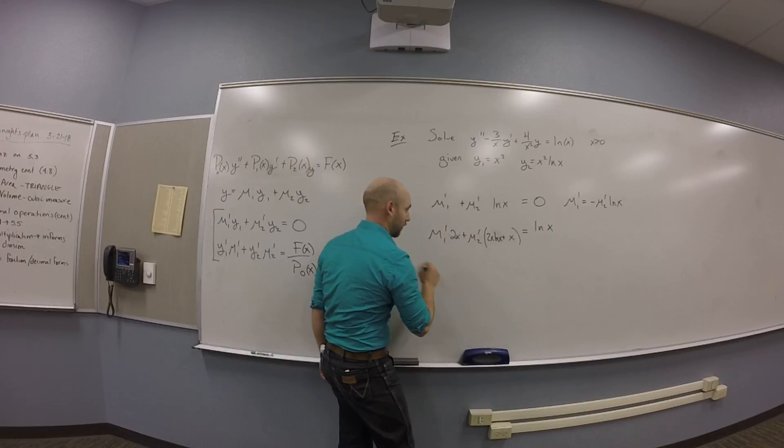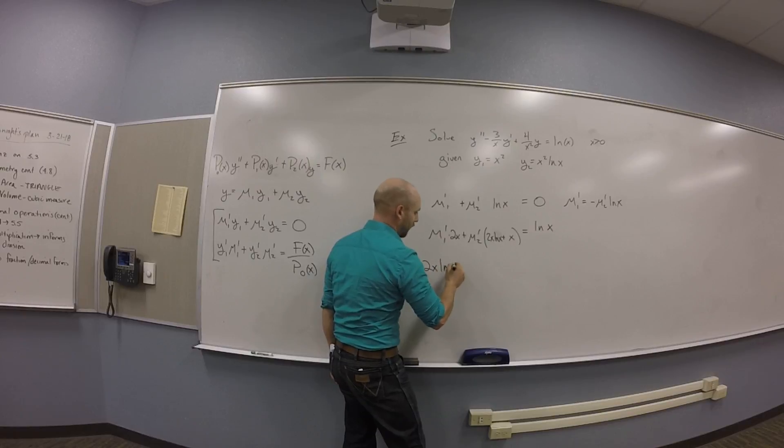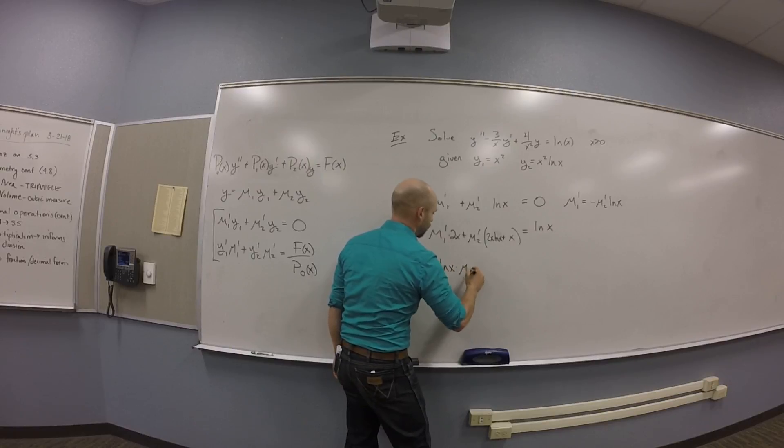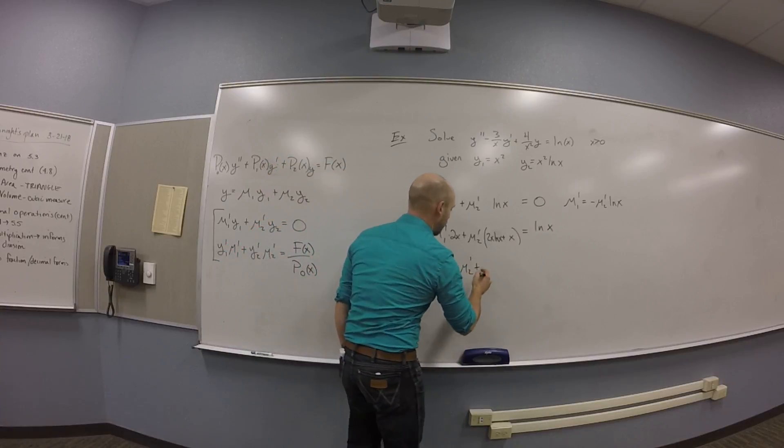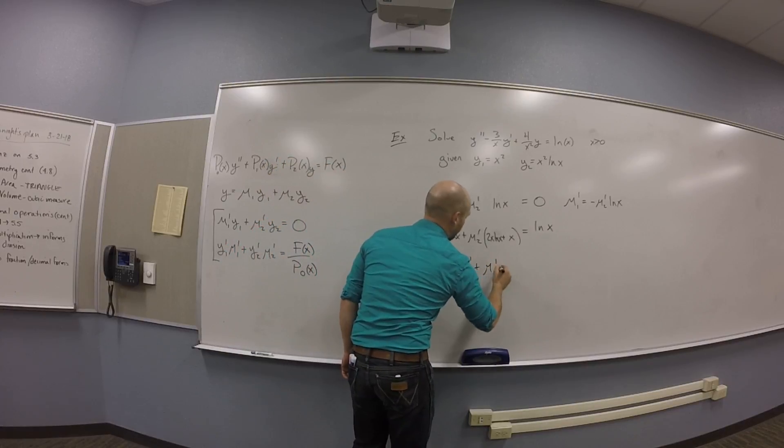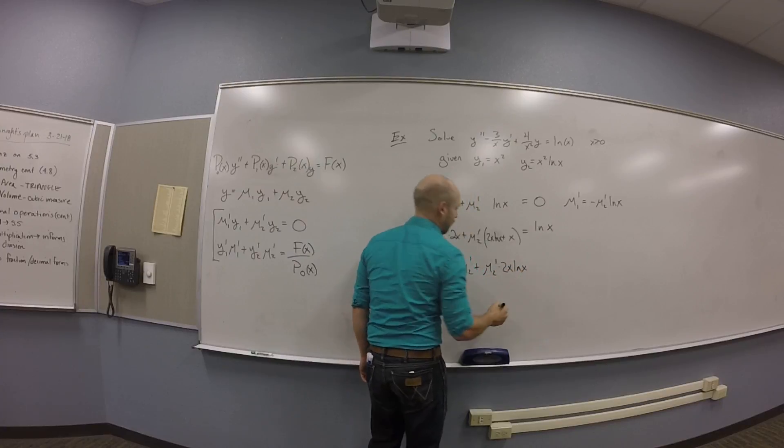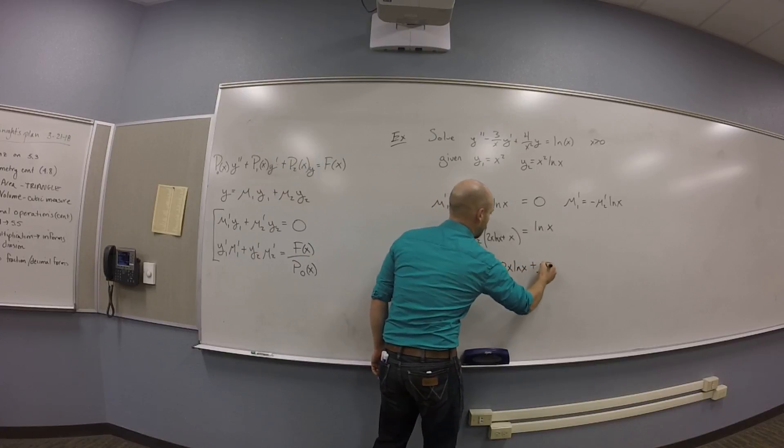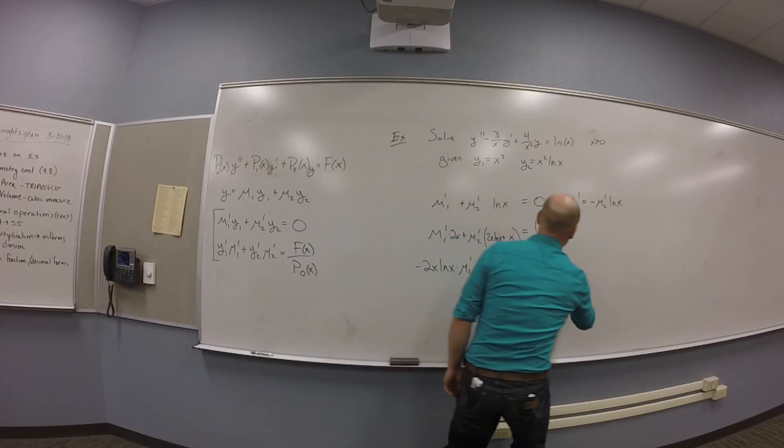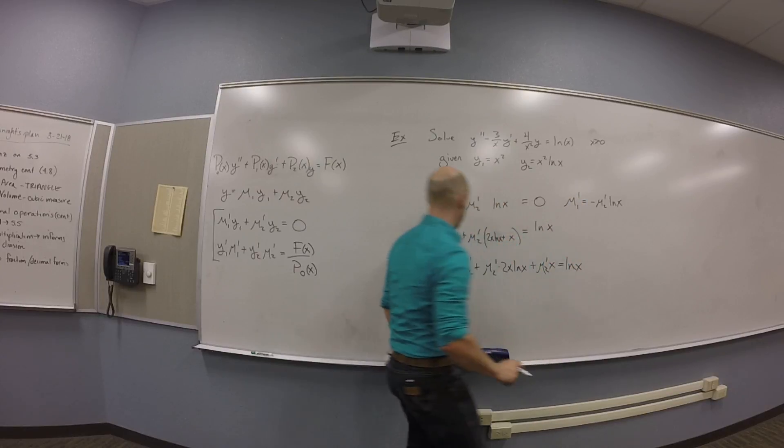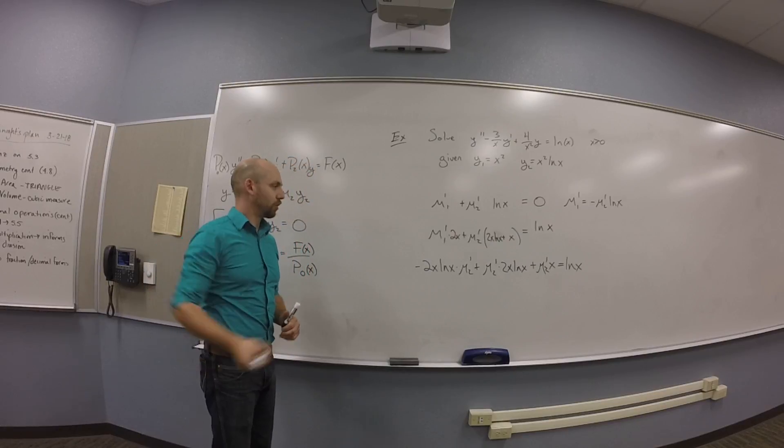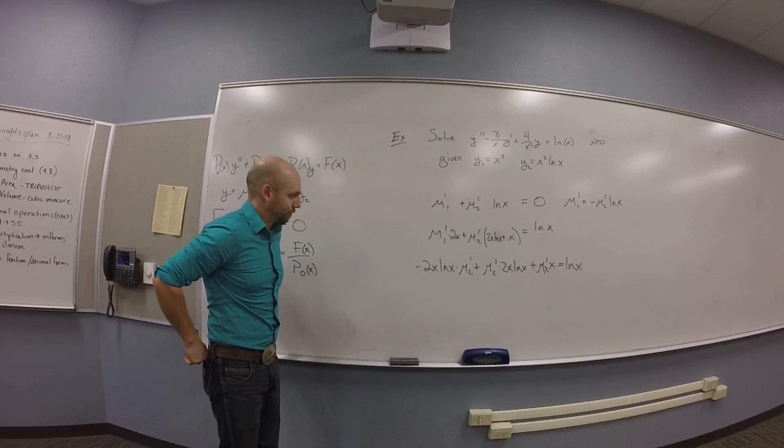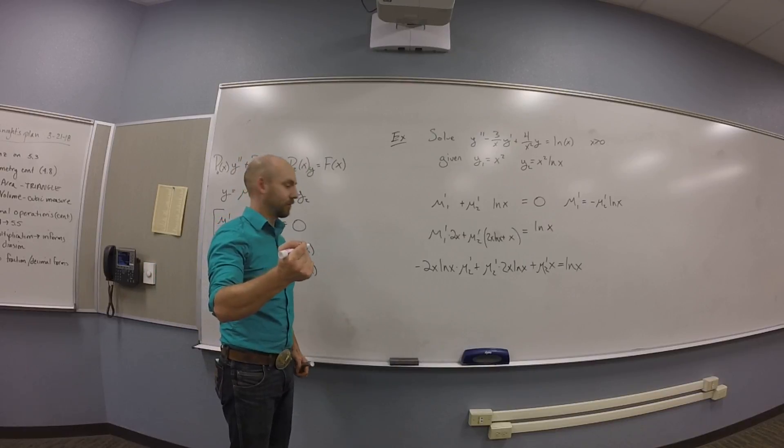So, take that thing, shove it in here, get minus 2X log X times mu2 prime plus mu2 prime times 2X log X plus mu2 prime X is log X. And then you could notice factor out mu2 prime. You could factor out mu2 prime. Oh, there's also cancellation.